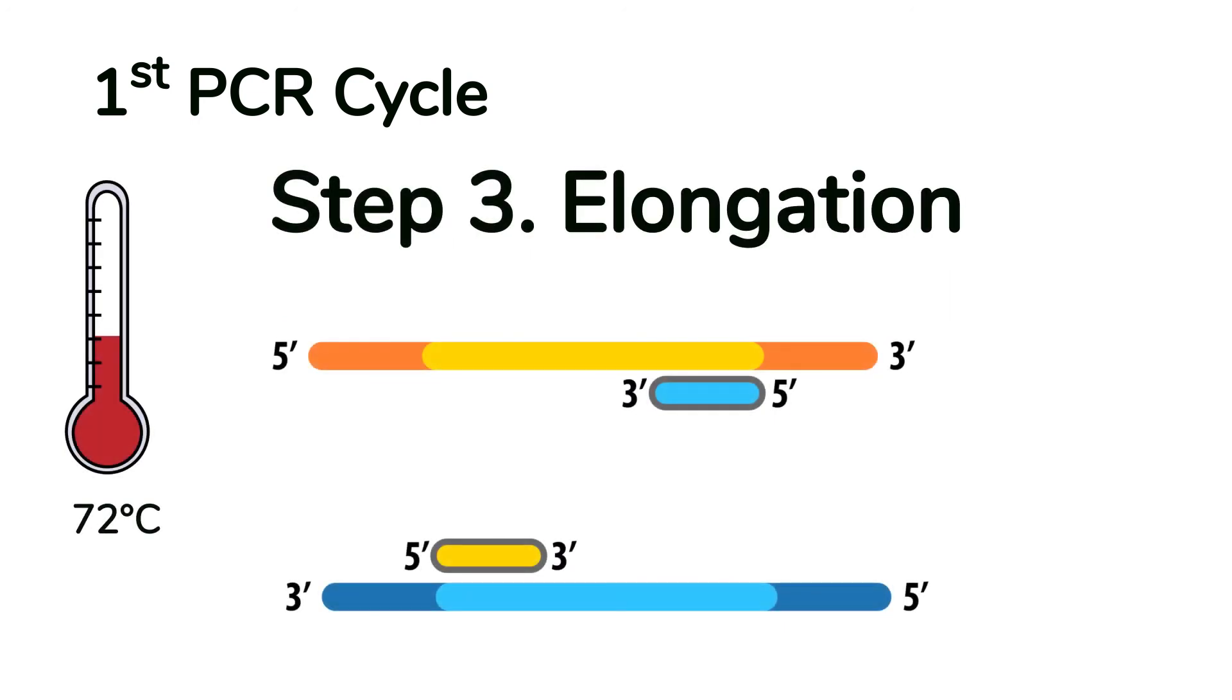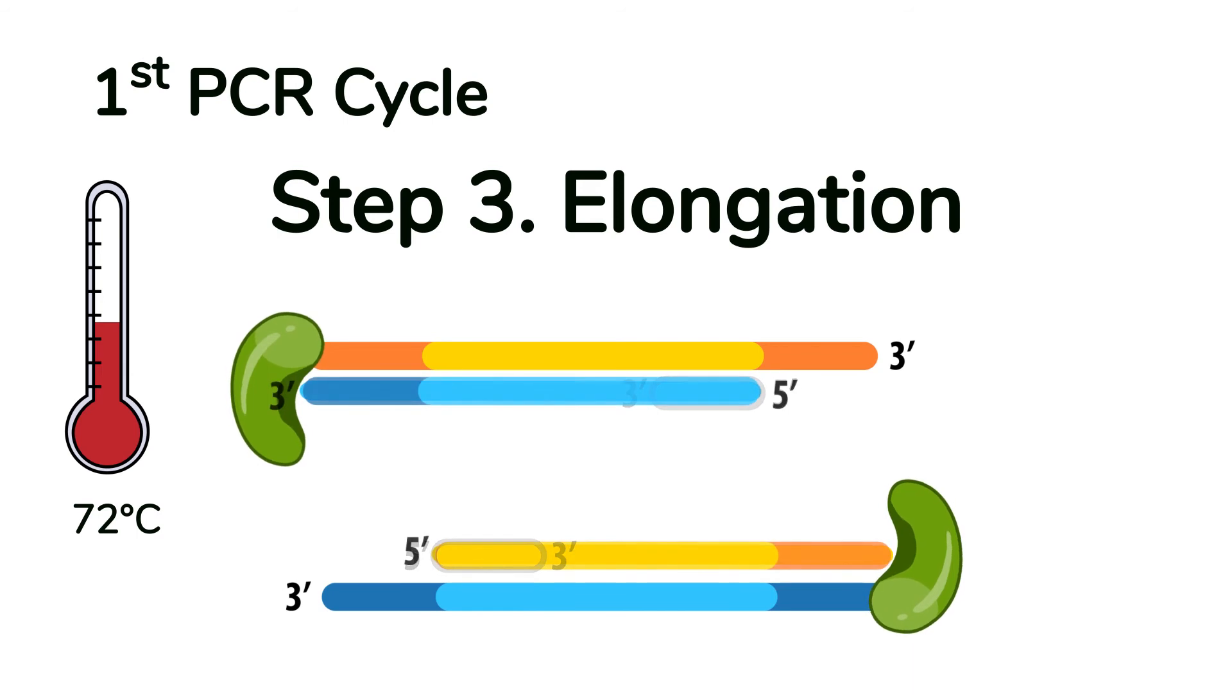Lastly, during elongation, the temperature is raised to 72 degrees Celsius, which is the ideal working temperature for TAC polymerase. The polymerase uses the annealed primers as the starting point for DNA synthesis. Each primer is extended along its DNA template by addition of DNTPs in the 5' to 3' direction until the end of the DNA template.